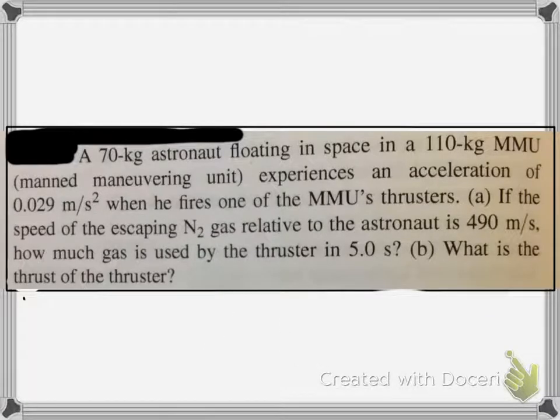When he fires one of the thrusters, if the speed of the escaping nitrogen gas relative to the astronaut is 490 meters per second, how much gas is used by the thruster in five seconds, and what is the thrust of the thruster? Now, I might be looking at it real quickly like, I didn't really get that much. Well, just what I usually do is always write the given information.